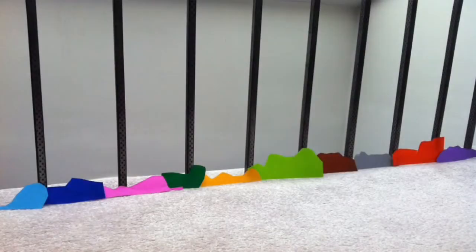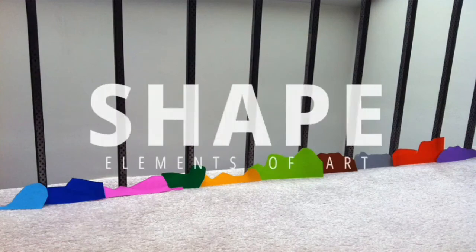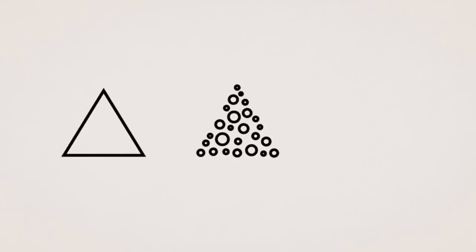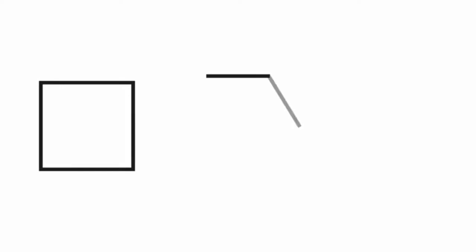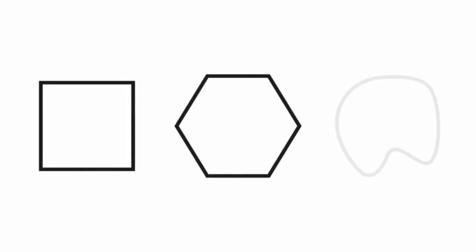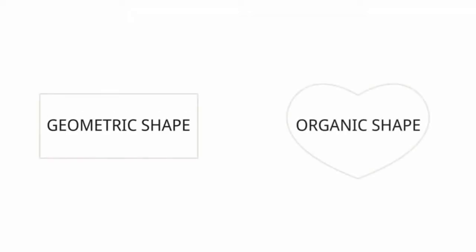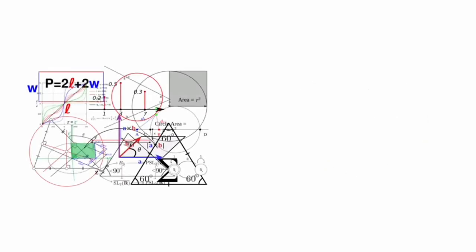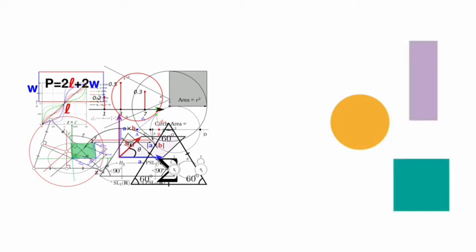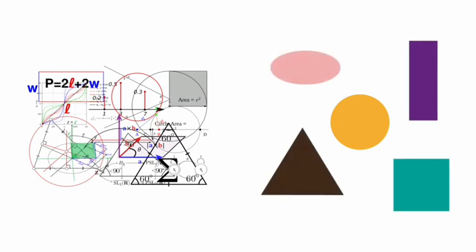Shape is an element of art that is two-dimensional — flat, or limited to height and width. Unlike form, shapes have height and width with no depth; they are always flat and their boundaries are defined by other elements of design such as line, color, texture, and value. There are two main types of shapes: geometric shapes and organic shapes. Geometric shapes can be determined mathematically; they are known as regular shapes and have specific names such as circle, square, rectangle, triangle, and oval.